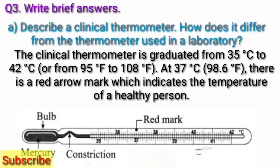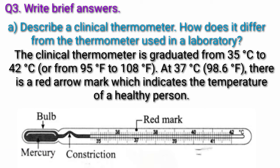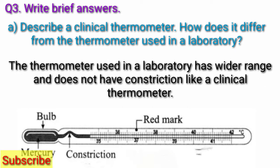The clinical thermometer is graduated from 35 degrees Celsius to 42 degrees Celsius. At 37 degrees Celsius, there is a red arrow mark which indicates the temperature of a healthy person. The thermometer used in a laboratory has a wider range and does not have a constriction like a clinical thermometer.